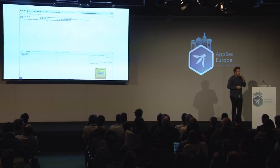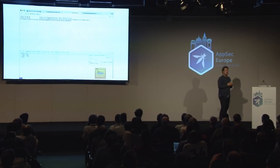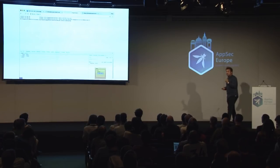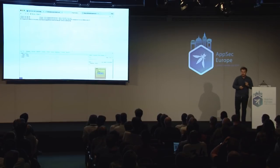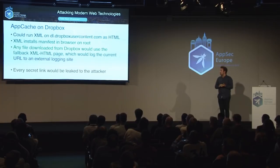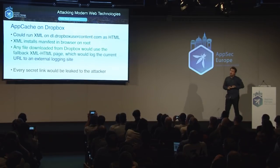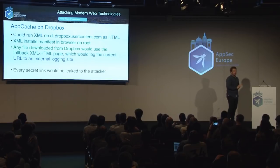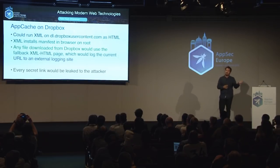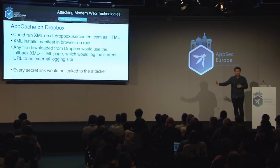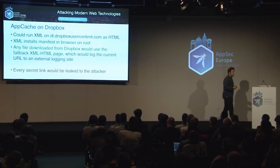When we sent this to Dropbox they were not happy, because they thought they had made every mitigation needed to prevent this. One of them was using a CSP called Sandbox, which is supposed to isolate you from doing anything. However, the manifest is still allowed on Sandbox — that was one of the bugs we identified. The whole bug was: you could run XML on dropboxusercontent.com as HTML, which installs a manifest. Every file downloaded from Dropbox would use the fallback HTML because of the cookie bomb, logging the URL and sending it to us. App cache never expires, so this was persistent unless you wiped all your storage.